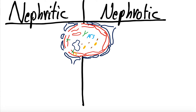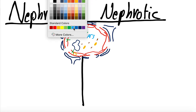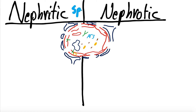In nephrotic syndrome, the major injury is to the podocytes — the finger-like projections that wrap around the capillary within the glomerulus — and that is often from a handful of different possible causes such as diabetes, lupus, autoimmune, viral, et cetera. Most importantly, this is a spectrum. You can have aspects of both nephritic and nephrotic syndrome combined, and that's important to note as we talk about what differentiates the two.